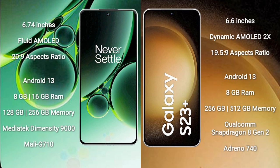OnePlus Nord 3 runs on the Android 13 operating system. Samsung Galaxy S23 Plus also runs on Android 13. OnePlus Nord 3 comes with 8GB or 16GB RAM and 128GB or 256GB internal storage. It features a MediaTek Dimensity 9000 processor and Mali-G710 GPU.